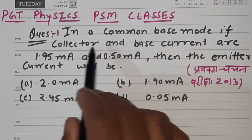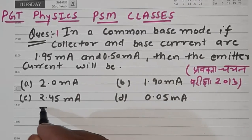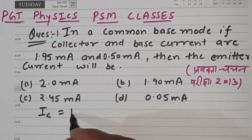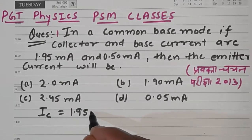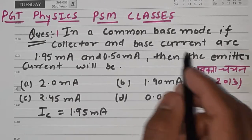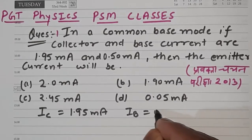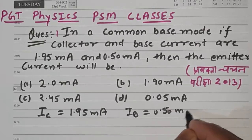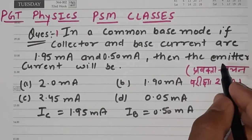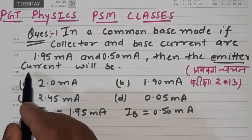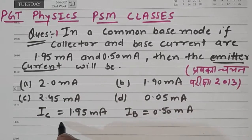So in this question, we have collector current, means Ic, given as 1.95 milliampere, and base current, means Ib, given as 0.50 milliampere. We have to calculate the emitter current.